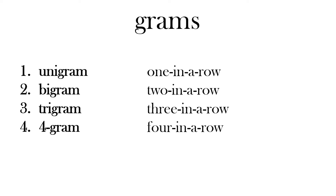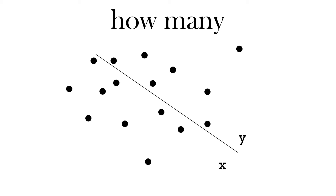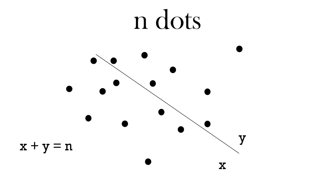How about using this 'n'? Here we have some dots — they could be samples. To the left of the line we've named these dots x, and to the right we call them y. If we have many samples we might not know how many there are before we start, so we just say n — we have n dots. In this example, x plus y will always equal n, no matter how many dots there are. They'll either be x or y.